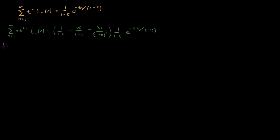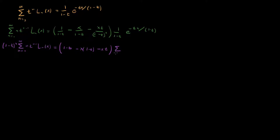When we do that, we're going to have (1 minus t) squared times the left-hand side sum from n equals 0 to infinity of n times t to the n minus 1 times L_n of x, equal to (1 minus t minus x) times the sum from n equals 0 to infinity of t to the n times L_n of x.